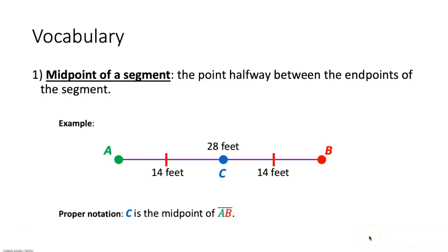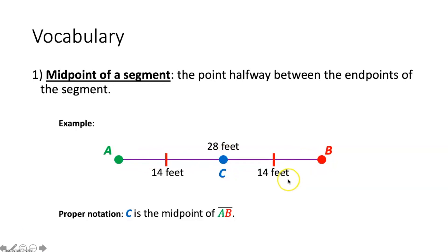What did the cowboy say when he accidentally farted? Darn tootin'. The first vocabulary term is the midpoint of a segment — that's the point halfway between the endpoints of a segment. So here we have a segment AB with endpoints A and B. The point halfway between those endpoints would be point C. That is the midpoint of this segment. You can tell it's the midpoint because each of these segments are congruent to one another — that's what these little tick marks mean.